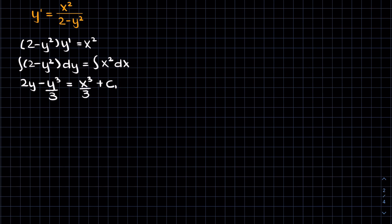Now we can't go much further, but we may want to tidy it up a little bit and get rid of the fractions, so we can multiply both sides by 3. Now our c1 will change slightly but it's still just some arbitrary constant, so we'll call it big C1. And we can't solve for y here, so this is our final answer.